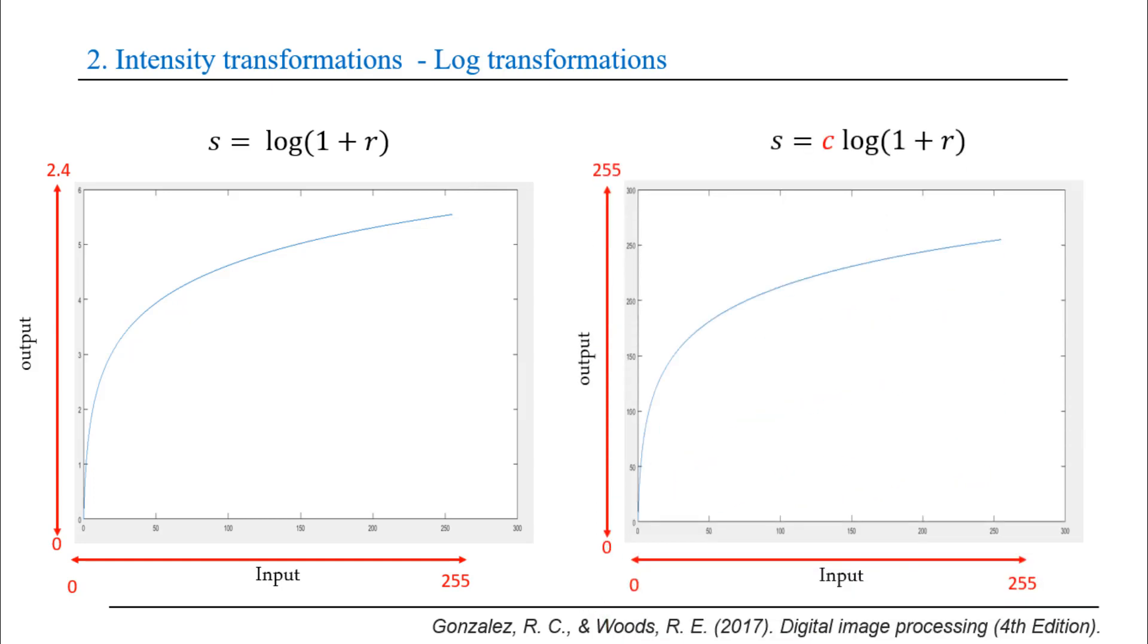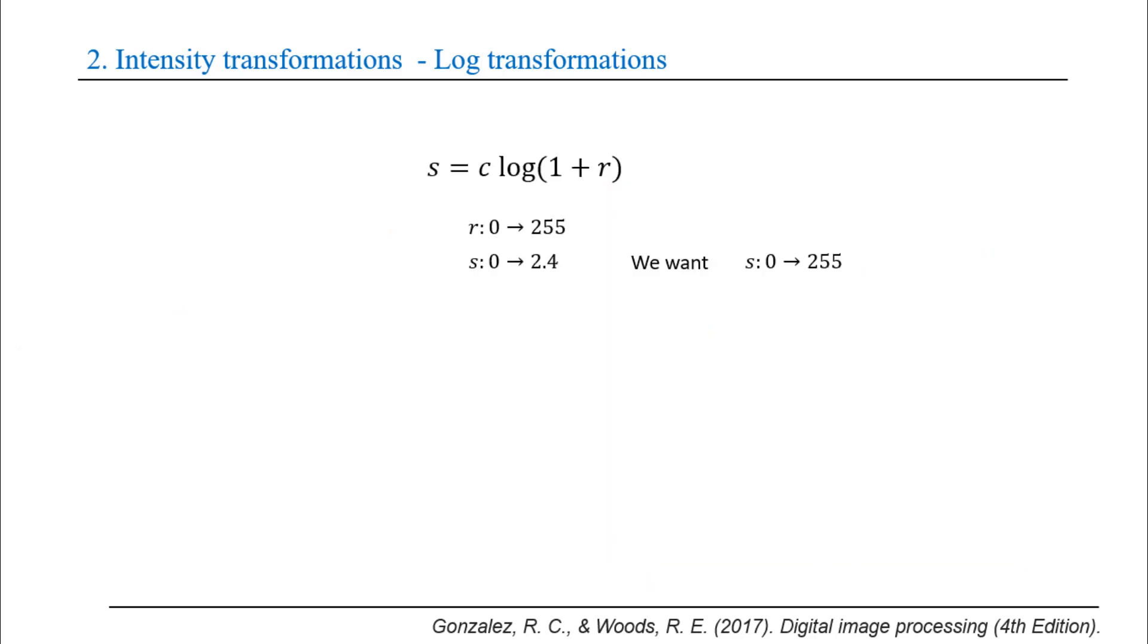In order to solve this problem, we multiply the output values by c to make the output range from 0 to 255. The question now is how to compute c. We have input range r from 0 to 255 and the output range s from 0 to 2.4. We want s range from 0 to 255, so we map the r_max to 255. So we get c equals 255 over log(r_max + 1).